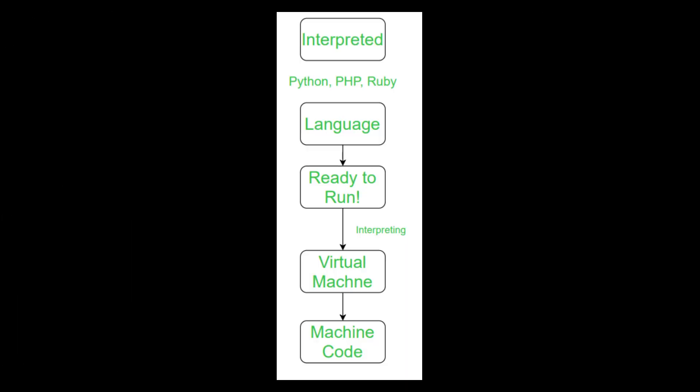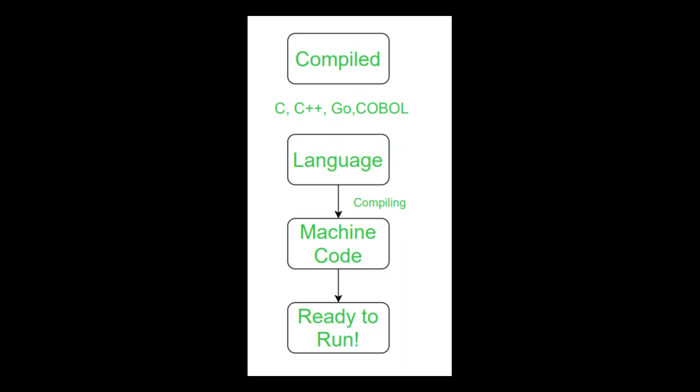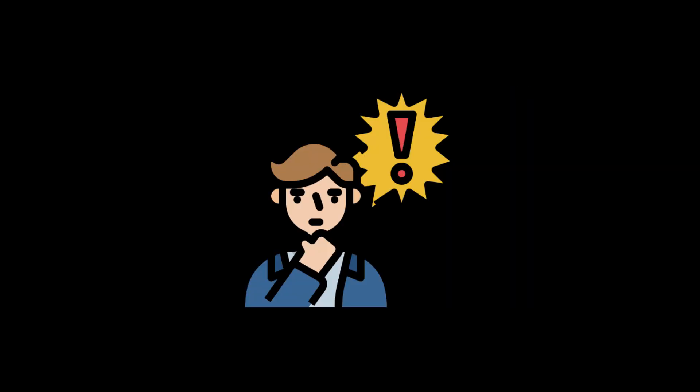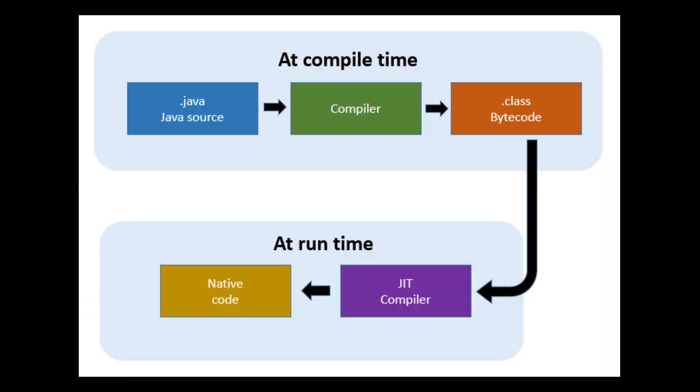which means it tends to be slower compared to compiled languages like C or C++. This can be a big issue for applications where speed is crucial, such as high-frequency trading or real-time simulation. While there are ways to mitigate this, like using JIT compilers or integrating with faster languages,